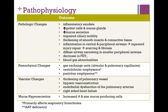Moving on to parenchymal changes, we typically see a change in gas exchange units such as the alveoli and pulmonary capillaries. In patients who have respiratory bronchial changes, we typically see centrilobular emphysema. Also, in patients with alpha-1 antitrypsin deficiency, we tend to see more of a panlobular emphysema.